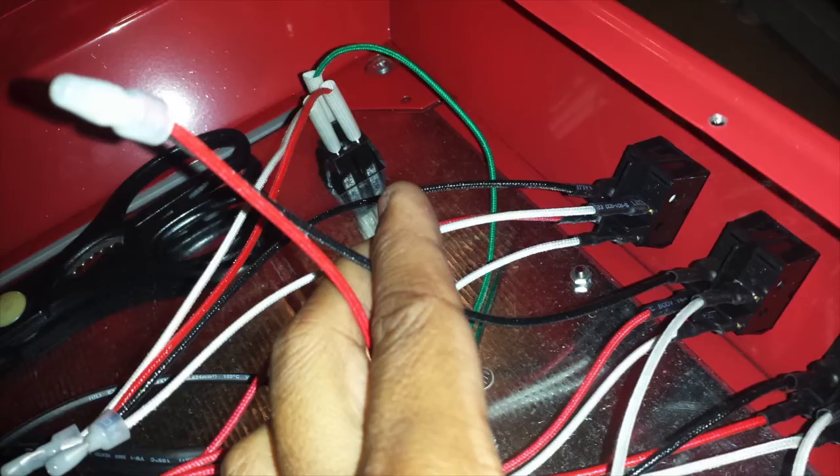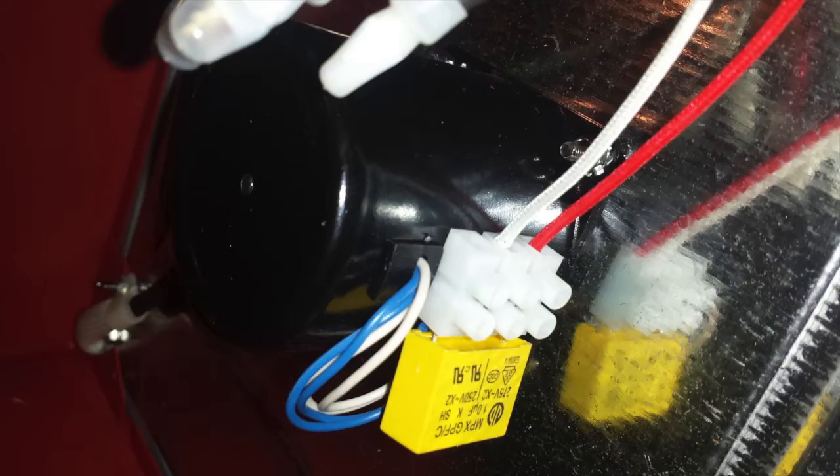Now it's time for some wiring. Connect the black wire from the stirrer switch to the red wire of the motor. Then connect the white wire on the light power switch to the white wire on the motor.